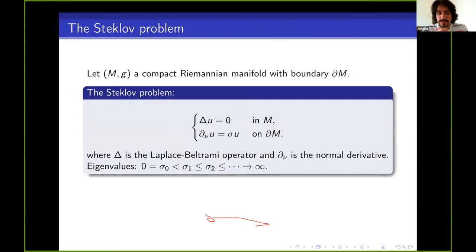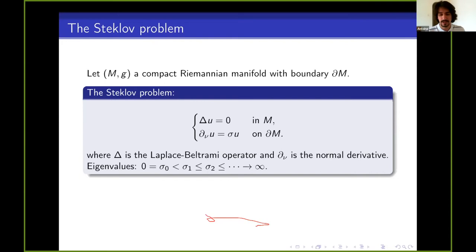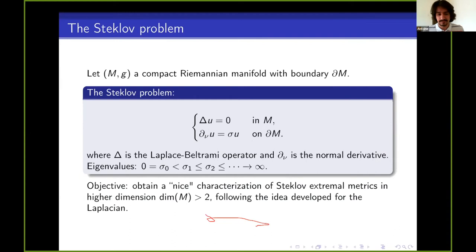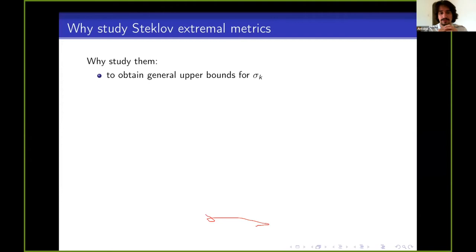Now, what happens with the Steklov problem? (M, g) is a compact Riemannian manifold this time with a boundary ∂M. The Steklov problem looks for harmonic functions u on M such that the normal derivative is proportional to the value of the function on the boundary, where the constant of proportionality sigma is the Steklov eigenvalue. Like for the Laplace case, the eigenvalues are discrete and increasing to infinity. The objective is to obtain a nice characterization of Steklov extremal metrics in higher dimensions, following the ideas developed for the Laplacian.